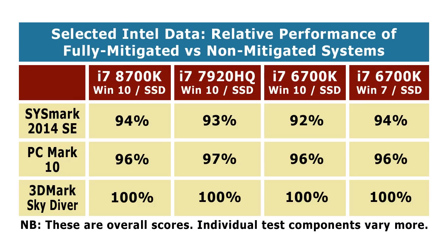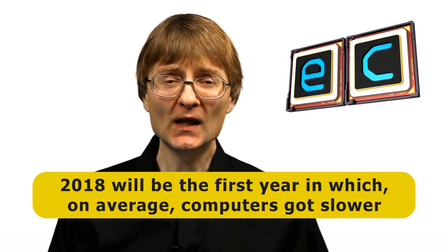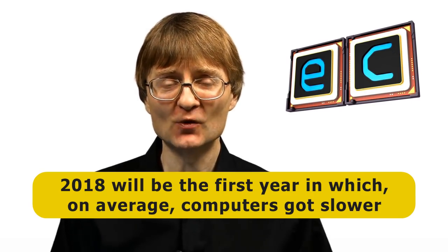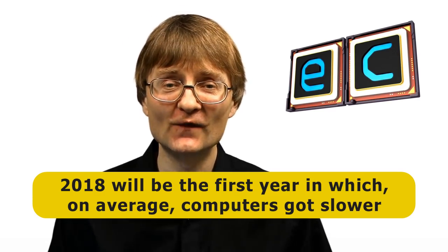This is to be expected because all these mitigations require browsers or operating systems to do more work, or hardware to cease executing speed-enhancement operations. It's therefore pretty certain that 2018 will go down in history as the first year ever in which, on average, computers were slower at the end of the year than they were at the start — a momentous point in computing history. Even if there are no security breaches linked to Meltdown and Spectre, there's going to be an enormous impact on the computing industry, as we all end up with slower computers.